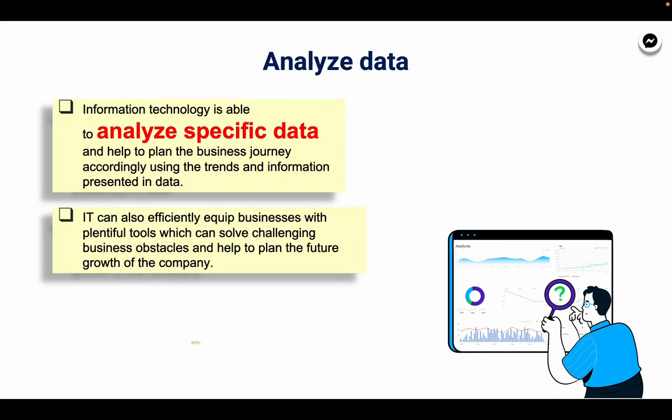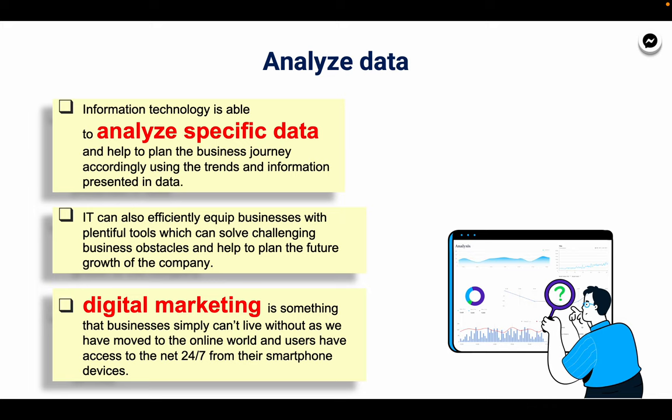Analyze data. Information technology is able to analyze specific data and help to plan the business journey accordingly using the trends and information presented in data. IT also efficiently equips businesses with plentiful tools which can solve challenging business obstacles and help to plan the future growth of the company. Digital marketing is something that businesses simply can't live without as we have moved to the online world and users have accessed the internet 24/7 from their smartphone devices.